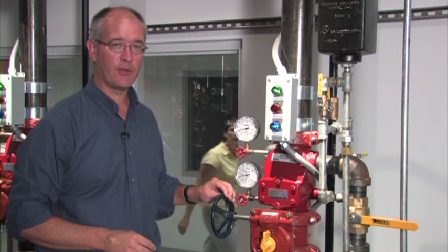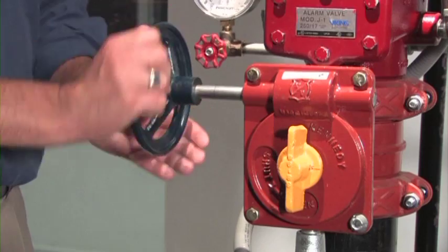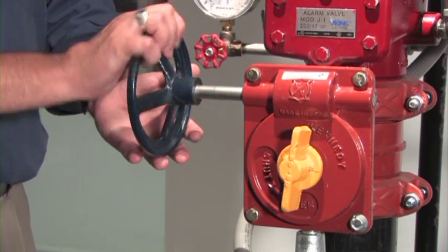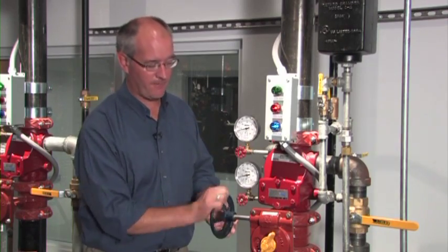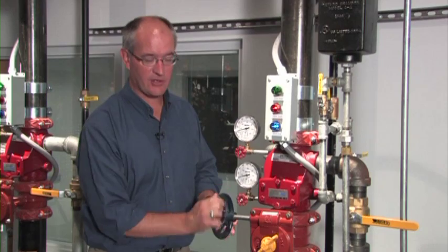The way to stop the water flow through the riser is to close the control valve. Once we close the control valve, we have a condition where we have a supervisory alarm through an electronic supervision on the valve.